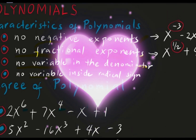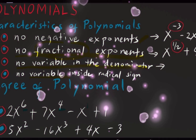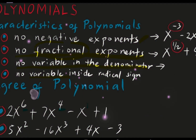Let's proceed to the third one. For example, you have this expression: 2 raised to 2 over x plus 3. If there is a variable or letter in the denominator, you cannot consider that as a polynomial. Take note: if there is a letter or variable in the denominator, that is not a polynomial.